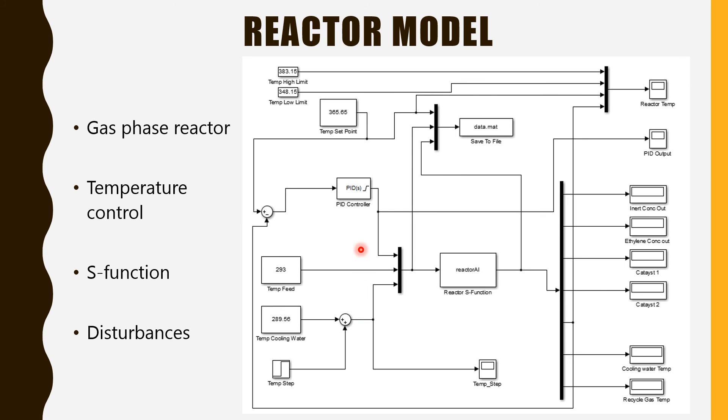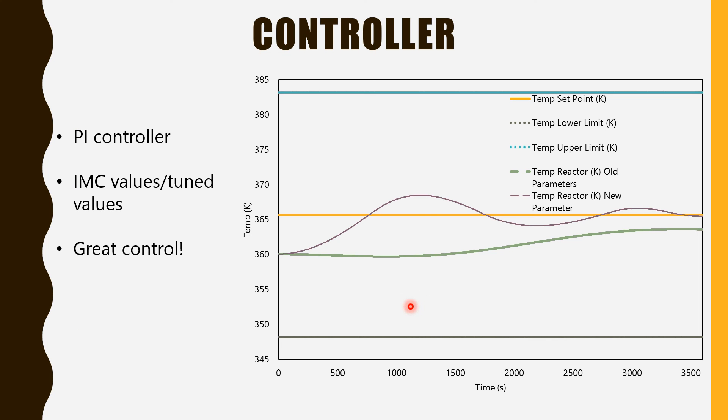So, what we did is we built a step test to the system, we fit it to an FOPDT model, and using the IMC correlations, we found constants for our PI controller.